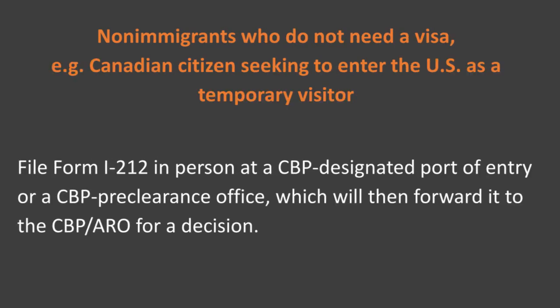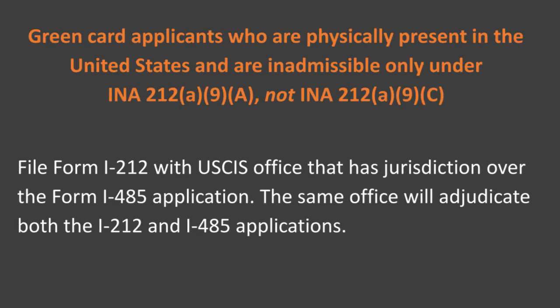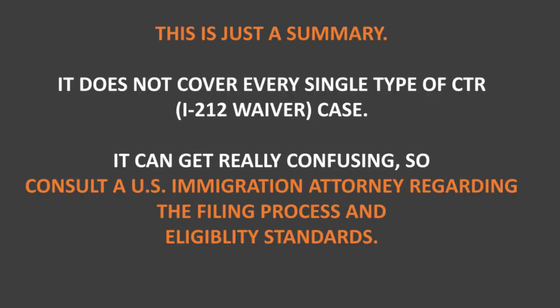Six: non-immigrants who do not need a visa, such as a Canadian citizen seeking to enter as a temporary visitor — file Form I-212 in person at a CBP-designated Port of Entry or CBP Preclearance Office, which will forward it to the CBP ARO for decision. Seven: green card applicants who are physically present in the US and are inadmissible only under INA 212(a)(9)(A) — file Form I-212 with the USCIS office that has jurisdiction over the Form I-485 adjustment application; the same office will adjudicate both the I-212 and the I-485. This is just a summary and does not cover every single type of CTR case. It can get really confusing, so consult an immigration attorney regarding the filing process.